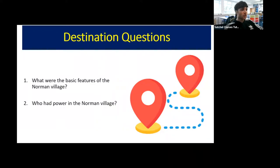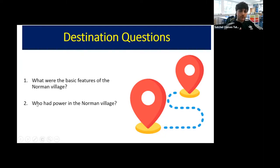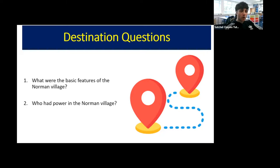The destination questions for today's lesson: number one, we're going to answer what were the basic features of the Norman village — what kind of buildings were present, how were they laid out, how were they organized? Secondly, we're going to look at who had power in the Norman villages, examining the social hierarchy — a key word to describe the power relationships present in Norman villages and wider society.